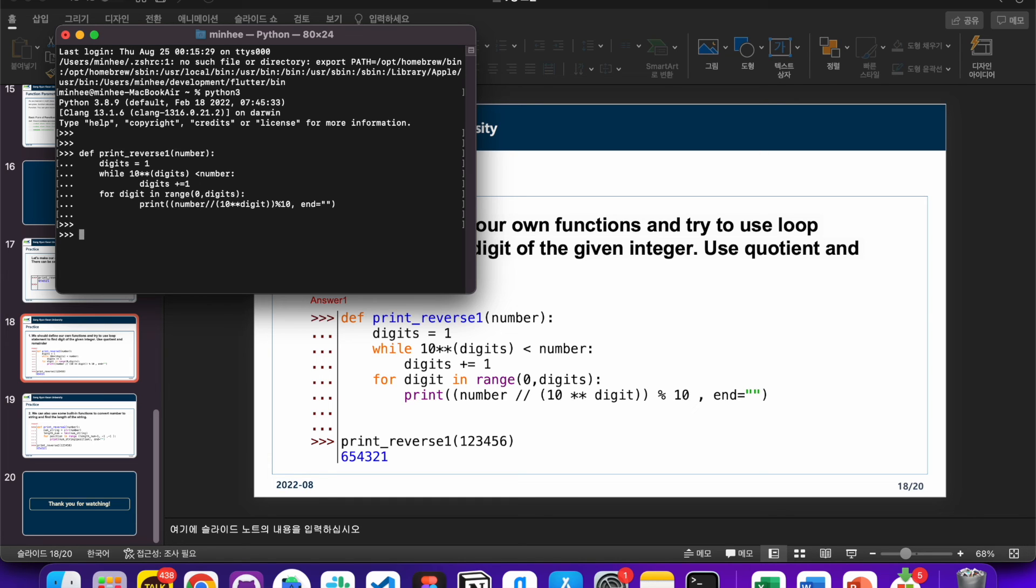I'll define a function that uses the fact that each digit of a number is divided by the power of 10. It outputs 654321 when given 123456.